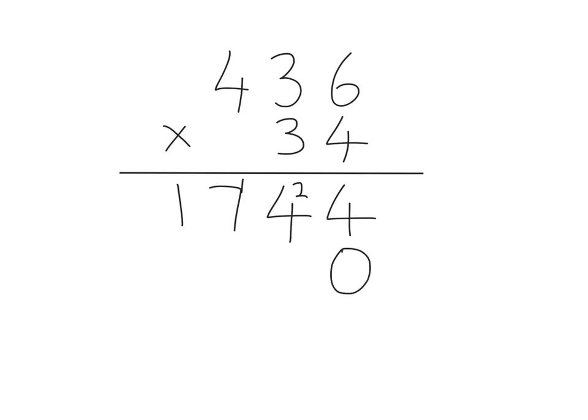And then we'll just carry on, same method we just used for the row above. So three times six, or 30 times six because in the tens column, three times six is 18. So we put the eight there, the one into the next column.